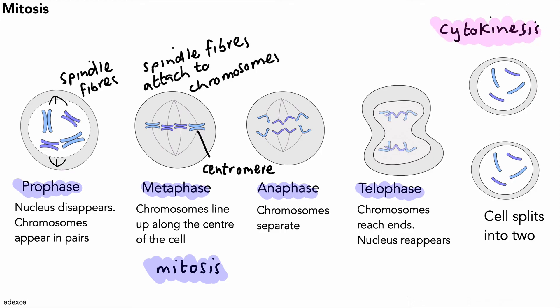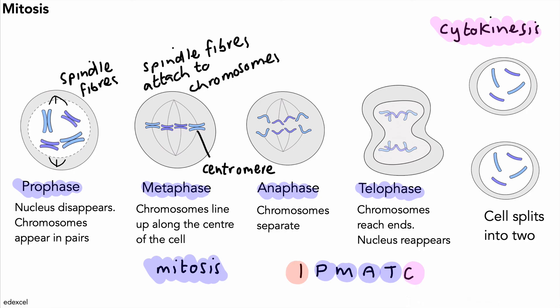Some students like to remember all of this using the acronym IPMAT, but you need a C on the end for cytokinesis — so it's IPMAT-C. The I is interphase, P is prophase, M is metaphase, A is anaphase, T is telophase — all of which are mitosis — and then C is cytokinesis at the end. These are the details of the cell cycle and mitosis that you need to know for your exam. Thanks for watching and I'll see you soon.